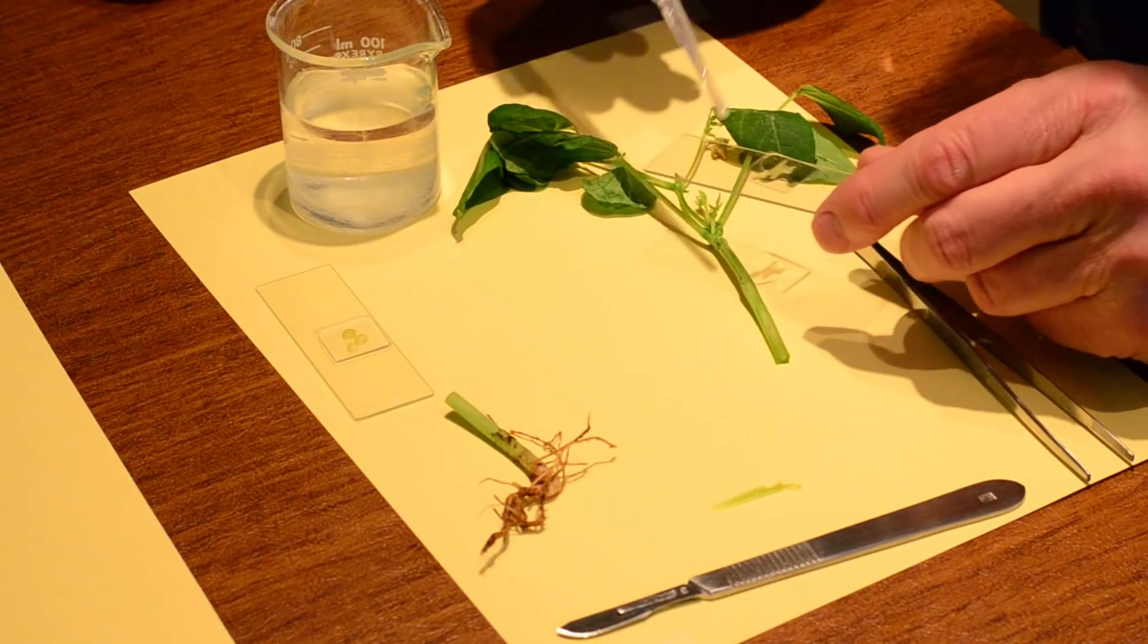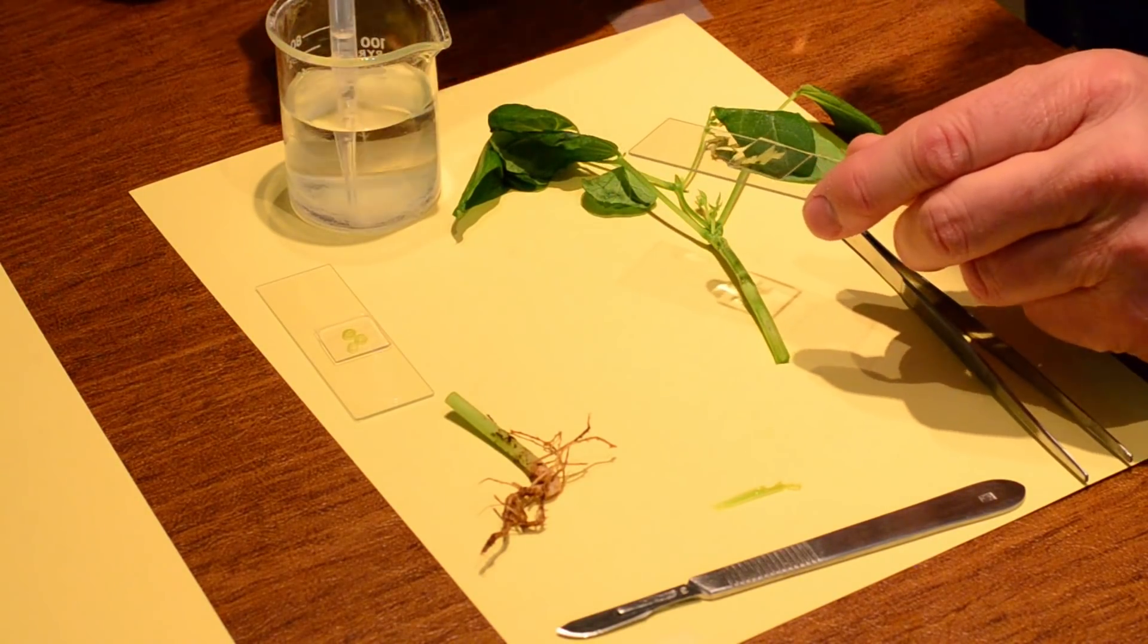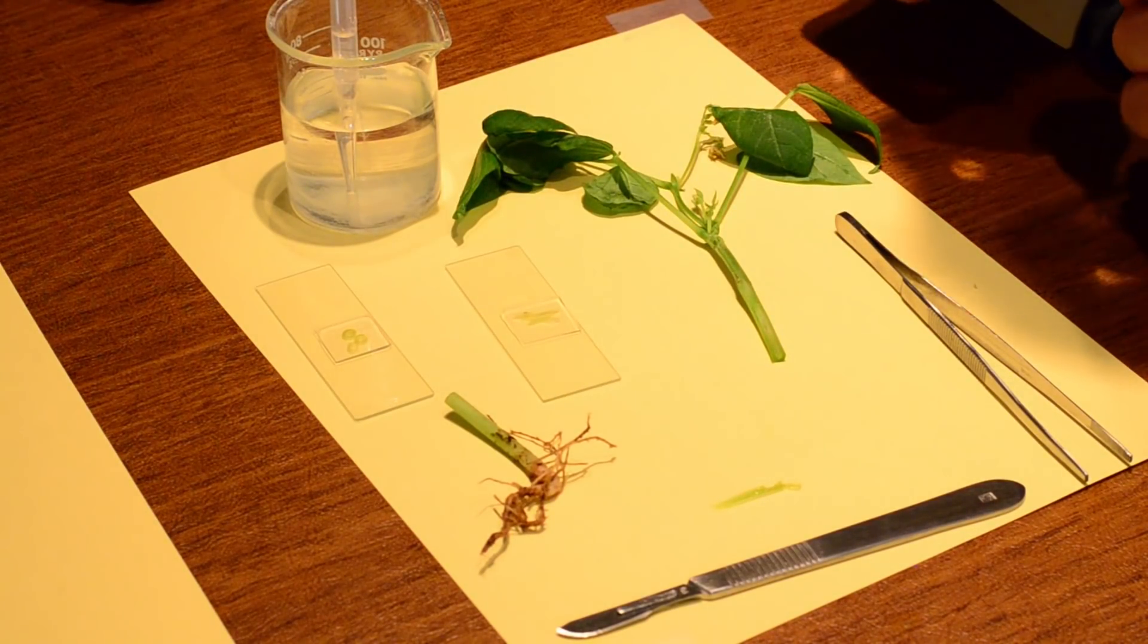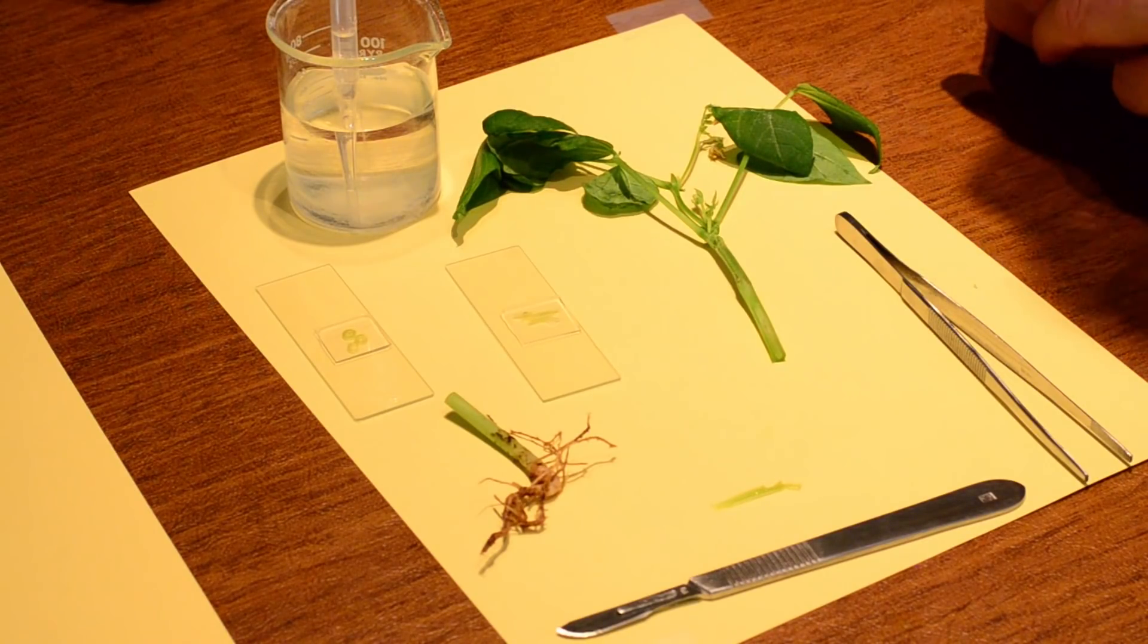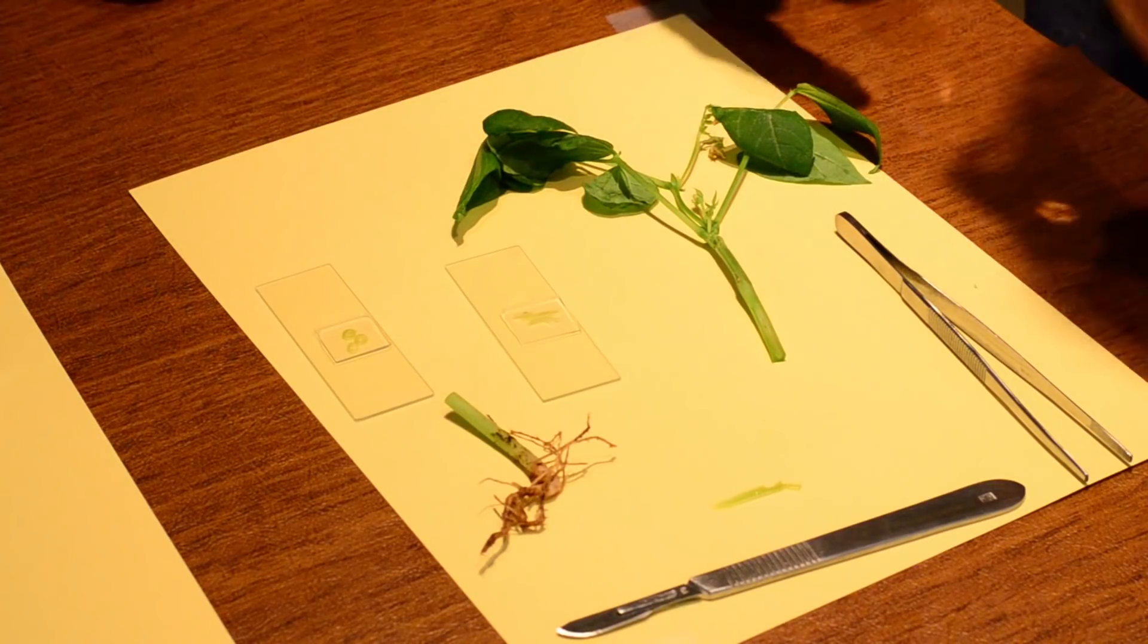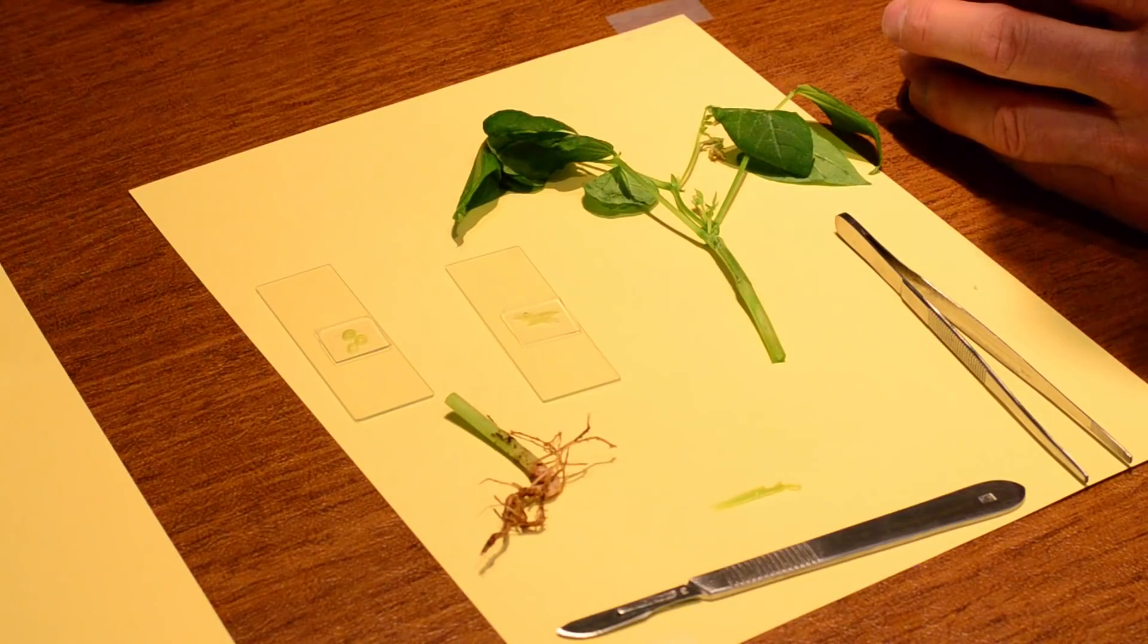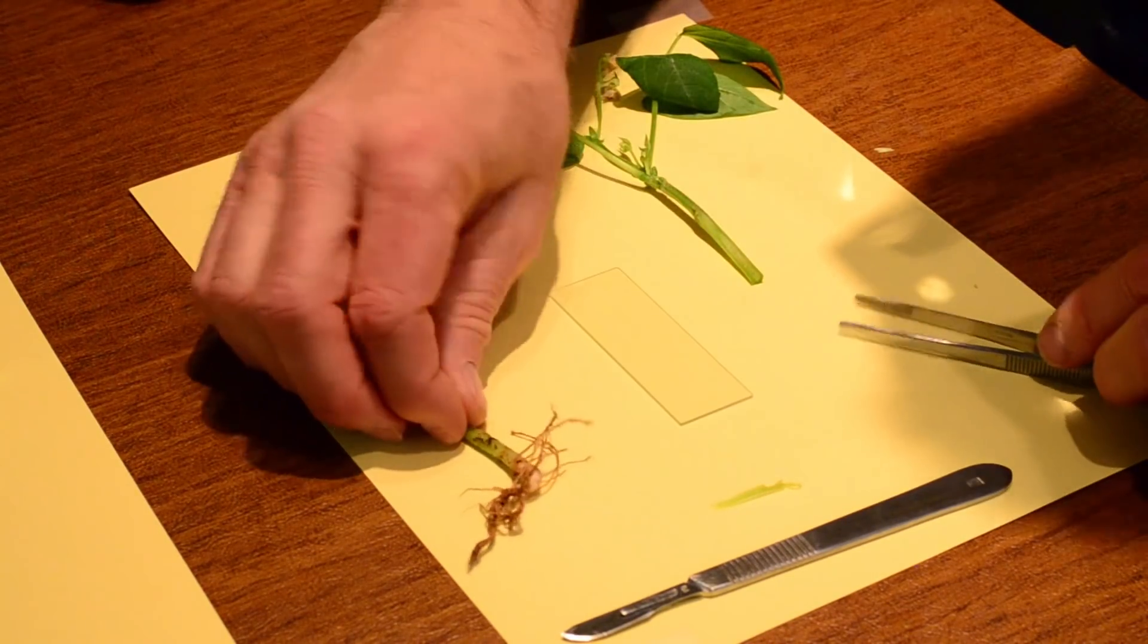We'll take turns doing this in class so everyone gets a chance that wants to. So now I have two slides, right? So I have a cross section and a longitudinal section. The next thing we do is we want to take a look at the roots. And so to get the roots, it's easy. We don't necessarily need to use the scalpel when we get root samples.